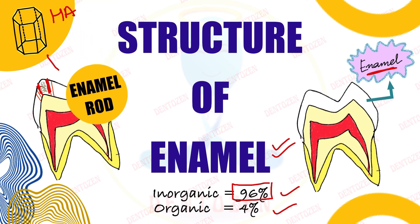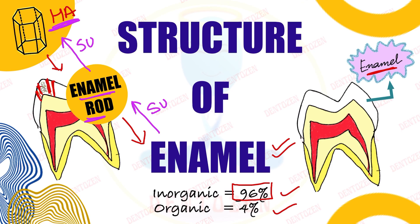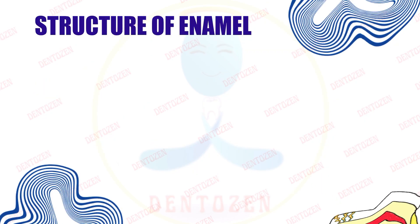These hydroxyapatite crystals are packed together in the enamel to form a structure known as enamel rods, and many such enamel rods are packed together to form enamel. So here you get two important questions: first, what is the structural unit of enamel? It is enamel rods. Second, what is the structural unit of enamel rods? It is hydroxyapatite crystals.